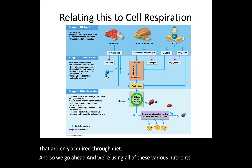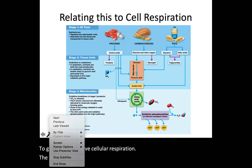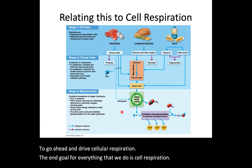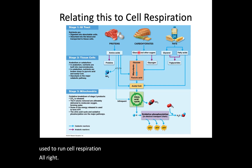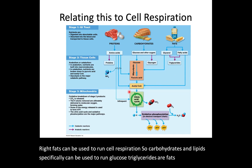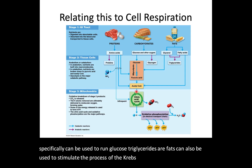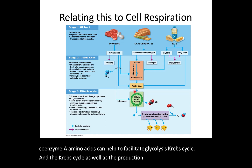We're using all of these various nutrients — specifically glucose — to go ahead and drive cellular respiration. The end goal for everything we do is cellular respiration; this is our reason for living: being able to create ATP. Proteins can be used to run cellular respiration; carbohydrates can be used to run cellular respiration; fats can be used to run cellular respiration. Triglycerides or fats can also be used to stimulate the Krebs cycle in the production of acetyl coenzyme A. Amino acids can help facilitate glycolysis, the Krebs cycle, as well as the production of acetyl coenzyme A.